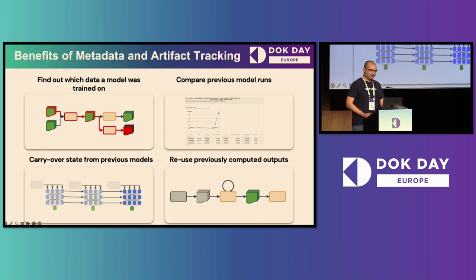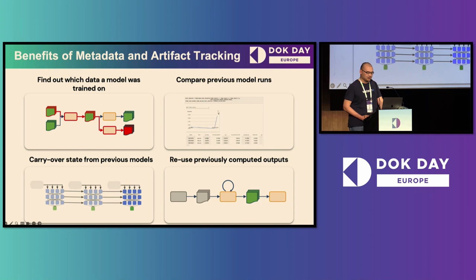Kubeflow Pipeline is a metadata-driven pipeline. Internally, the pipeline backend stores runtime information of a pipeline run in a metadata store. Runtime information includes the status of tasks, availability of artifacts, and custom properties associated with each execution or artifact. The metadata store also enables pipeline step caching, which means if arguments are exactly the same, a task will be skipped and the old output is reused.